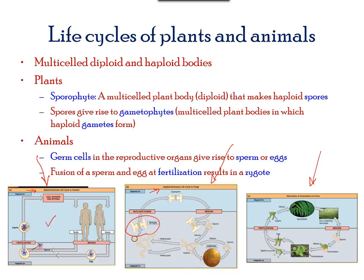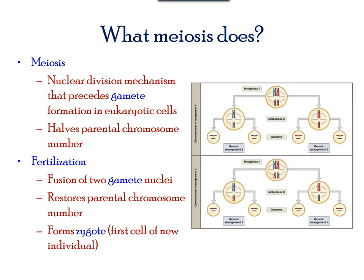While other organisms, mainly plants, have an alternation of generations, in which the diploid stage produces spores. This is within a sporophyte of a plant. Spores then give rise to gametophytes within the plant that form gametes. This is the haploid cell within the reproductive organisms. Fusion of these cells, such as a sperm and an egg, produces a zygote.